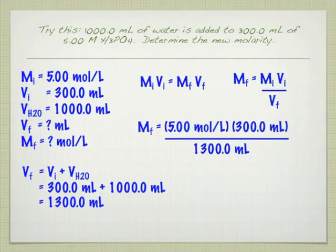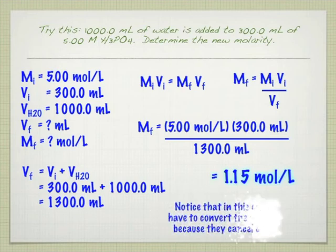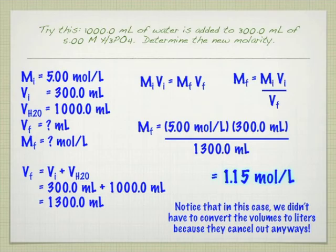Now, notice that I'm leaving this in milliliters and not changing it to liters. And the reason is it's going to cancel out anyway. You can certainly have changed that volume to liters. But again, it's just going to cancel out. It's still going to be that 3 over 13 ratio whether you convert it to liters and it's 0.3 over 1.3 or if you leave it in milliliters. And so that's one of those little shortcuts that you might want to keep an eye out for.